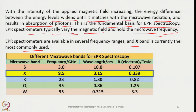Different microwave bands are used in EPR spectroscopy: S band, X band, K band, Q band, and W band, with corresponding frequencies in gigahertz and wavelengths in centimeters. The corresponding magnetic field strengths used are: S band 0.107 T, X band 0.339 T, K band 0.82 T, Q band 1.25 T, and W band up to 3.3–4 T.